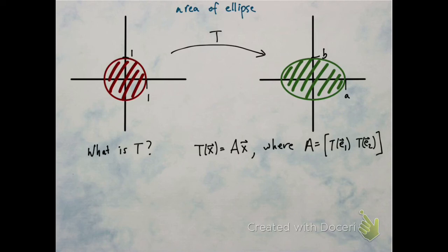So T applied to the vector (1,0), and the second column is T applied to the vector (0,1).